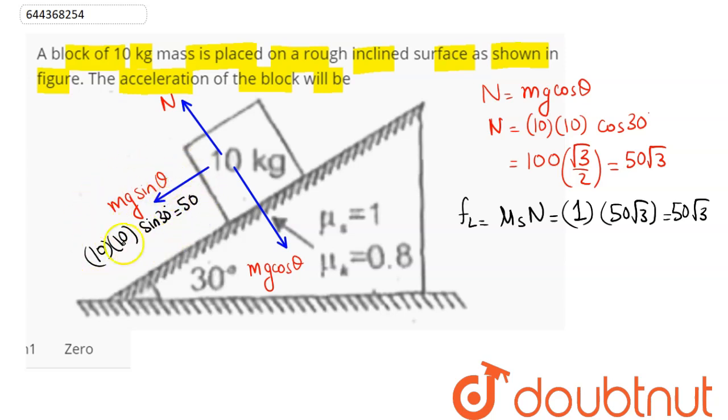Since this mg sine theta value is 50 which is less than the limiting friction, this mass will not accelerate as the static friction prevents the sliding of the block.